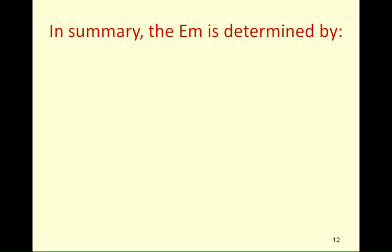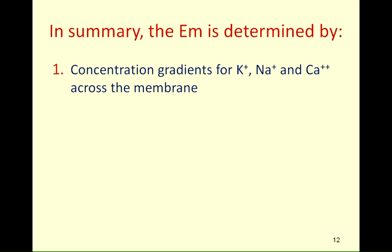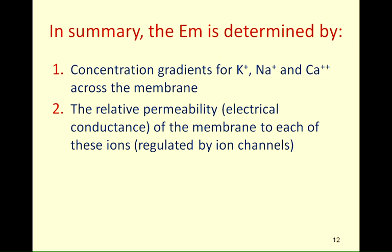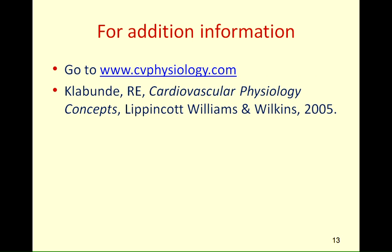In summary, the membrane potential is determined by: concentration gradients for potassium, sodium, and calcium across the membrane; the relative permeability or electrical conductance of the membrane to each of these ions, regulated by ion channels; and third, electrogenic ion pumps. For more information on this topic, please see the relevant material at www.cvphysiology.com or in my textbook, Cardiovascular Physiology Concepts. Thank you.